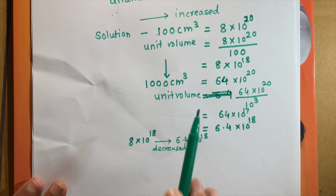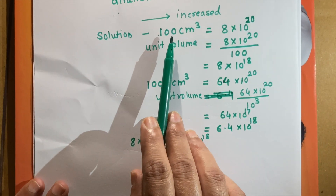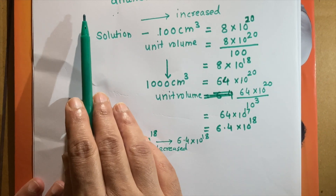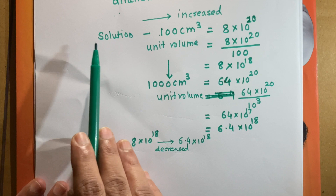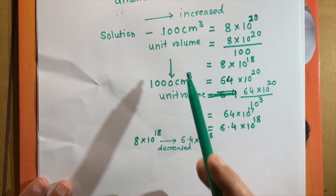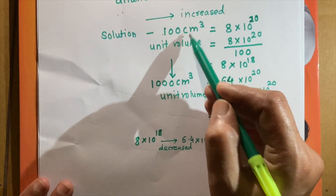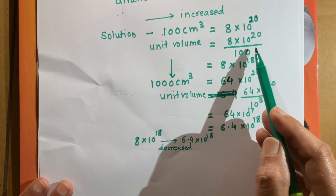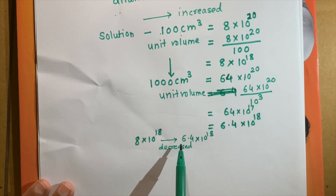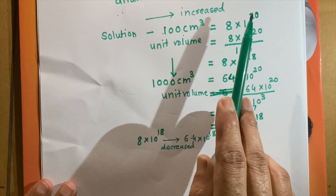Remember here the basic concept: on dilution, ionization increases, so number of ions are increased, and we might say conductivity must increase. But what happens actually? The number of ions are increased, but not in the same proportion as the dilution. We have diluted the solution by 10 times, but the number of ions did not increase in the same proportion. Therefore, remember that conductivity decreases with dilution.